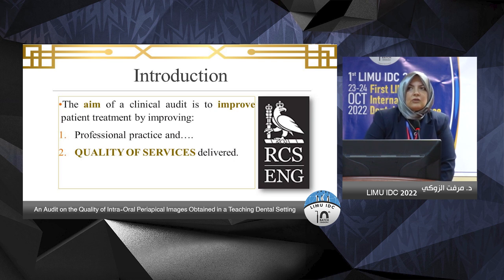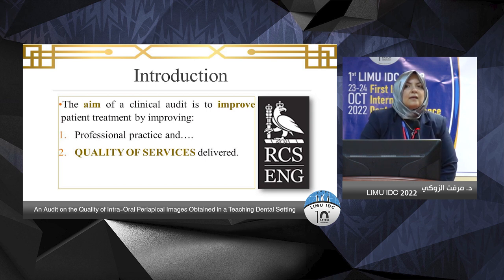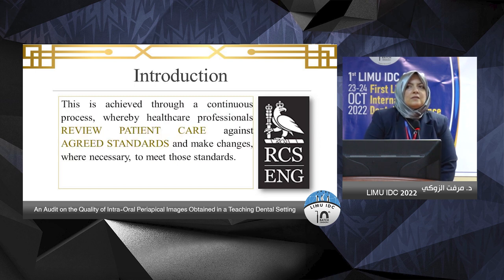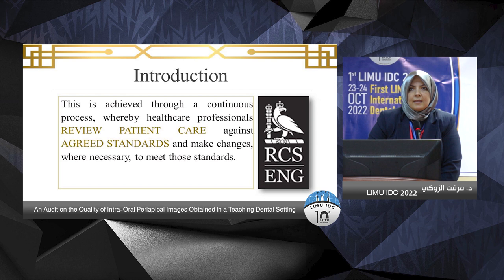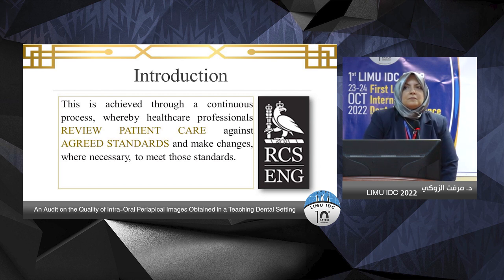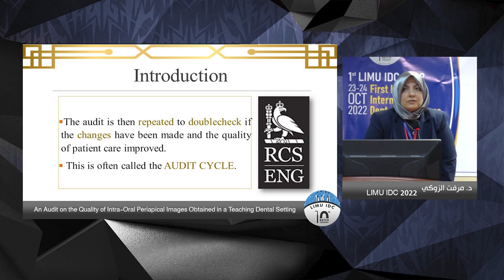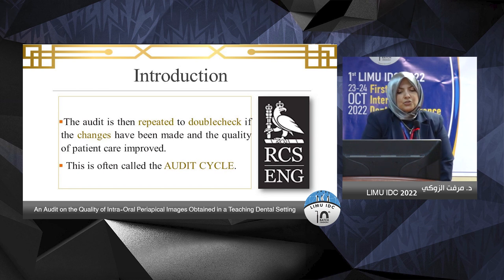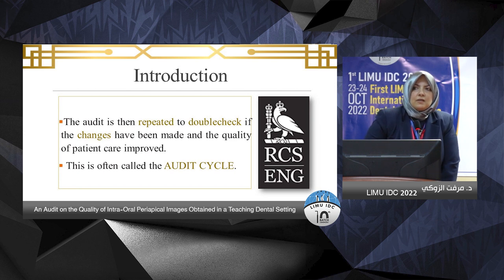The aim of a clinical audit is to improve patient treatment by improving professional practice and quality of service delivered. This is achieved through a continuous process whereby healthcare professionals review patients' care against agreed standards — which may be adopted from a nearby region, your department, or even a textbook. The audit is then repeated, changes are implemented and double-checked. This is called the audit cycle.